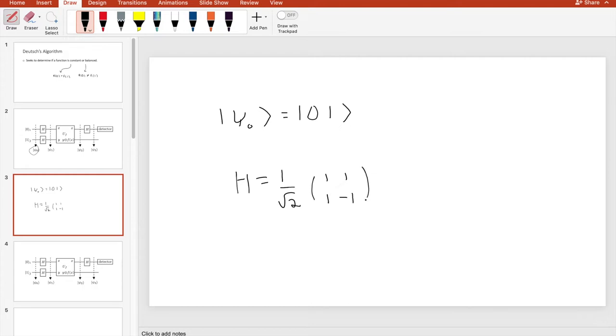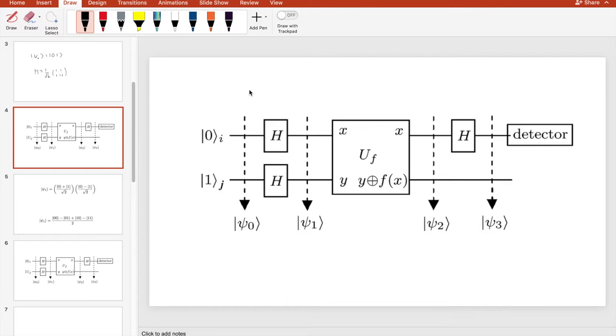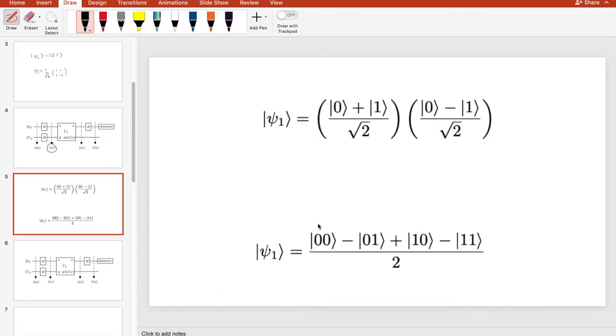Again, the root 2 is important for the normalization constraint. So now moving on to the next step in the algorithm. Once our qubits have passed through the Hadamard gate, they are in this form. From there, we can expand the qubits by some very simple multiplication. By simply multiplying these two brackets together, we are left with this qubit form.